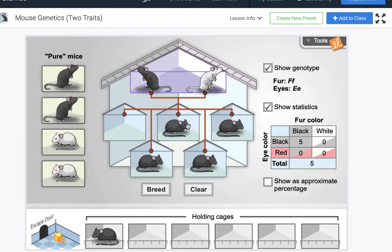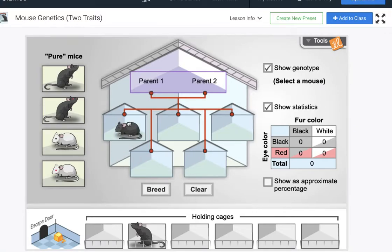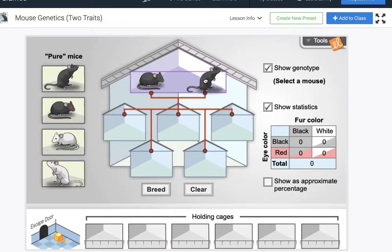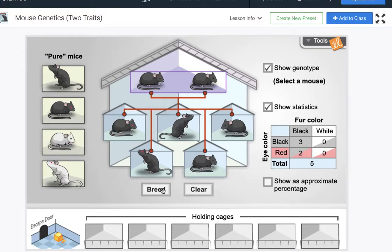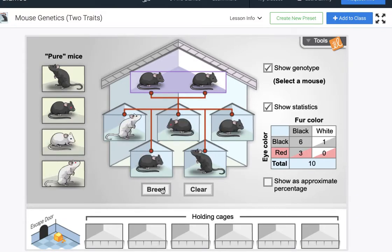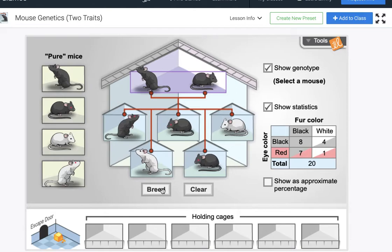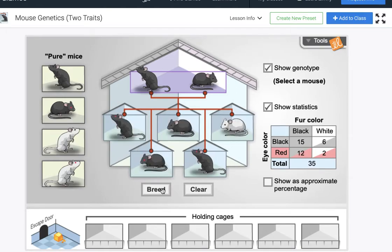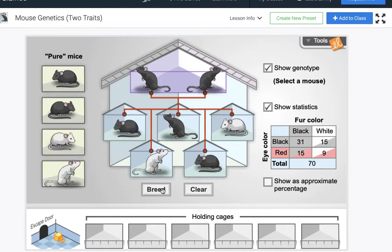We're gonna grab this black mouse with the recessive or heterozygous eye color and we'll grab another black mouse with the same. This is gonna look very similar to our first cross and we should be able to make predictions that both the red eye color and the white fur coat should return at some point in our breeding session here. So it doesn't come right there but if we breed these mice enough we're going to see those show up in the traits.